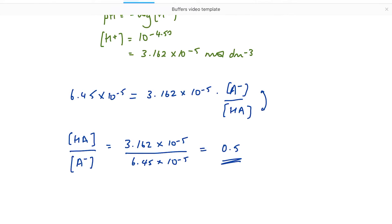So what does that actually mean if it's a ratio? Well, what's that telling me is that we have a ratio of 0.5 to 1. So 0.5 of HA to 1 of my salt, A-.